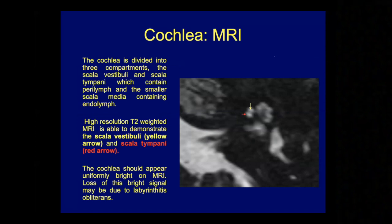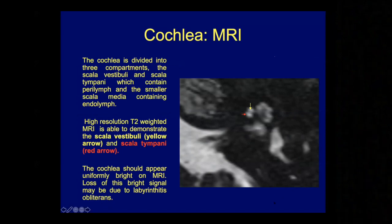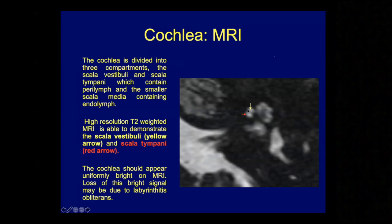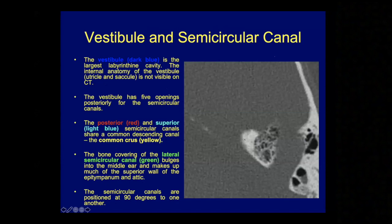On MRI T2-weighted axial imaging of the cochlea, particularly with 3T scanners, you can see the individual compartments: the basilar membrane is visible, with the scala vestibuli marked in yellow and the scala tympani marked in red.